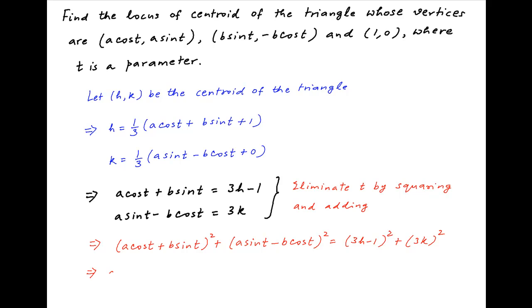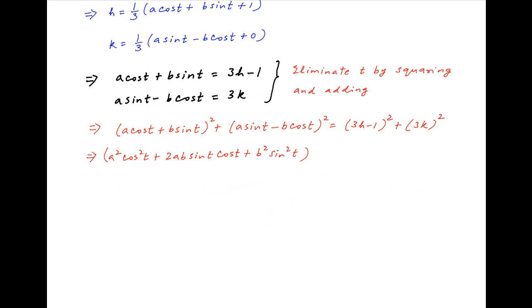Expanding, the left-hand side gives: a²·cos²(t) + 2ab·sin(t)·cos(t) + b²·sin²(t) + a²·sin²(t) − 2ab·sin(t)·cos(t) + b²·cos²(t), and this equals the right-hand side, which is (3h − 1)² + (3k)².